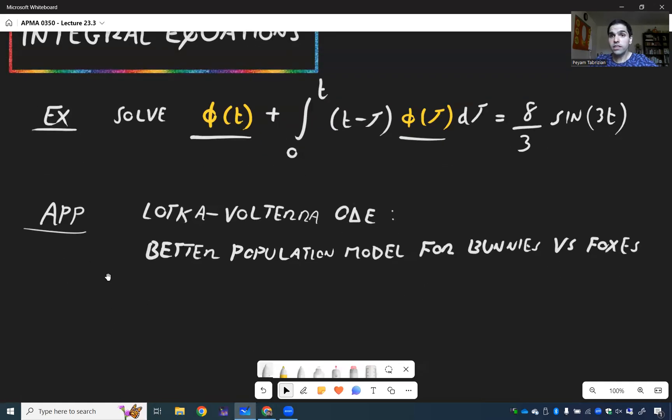Well, first of all, notice this does have a convolutional form. Well, notice we have φ(t).